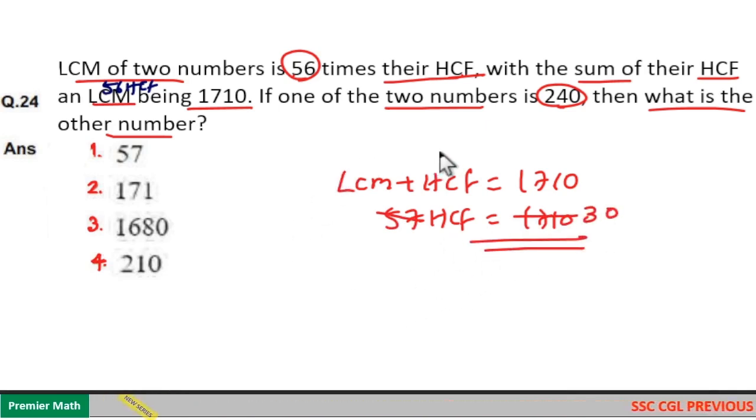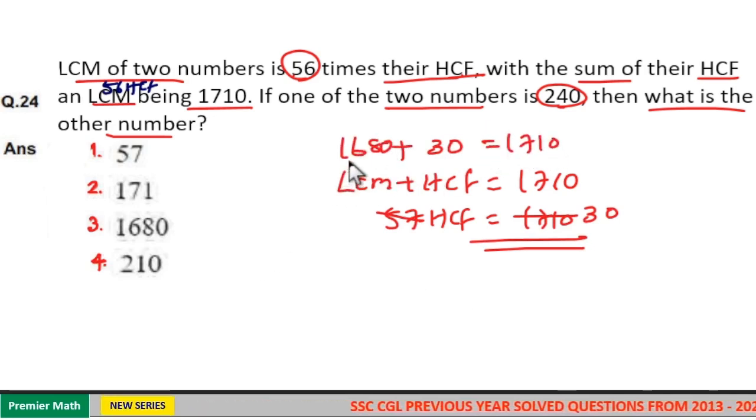So HCF is 30. This means HCF is 30, then LCM should be 1680 because the sum was 1710.